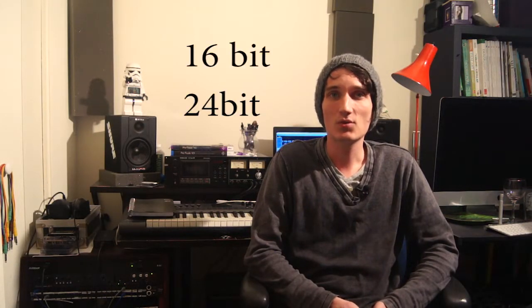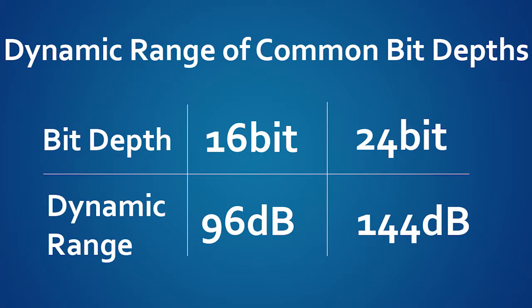Now let's move on to bit depth. The useful dynamic range of speech and music is from about 40 decibels to 105 decibels, so an analog to digital converter must be able to accurately represent differences in amplitude of at least 65 dB. Through a process known as quantization, each sample is assigned to the closest available amplitude value. Binary digits called bits are used to quantify each sample. The common bit depths are 16 and 24 bits — a 16-bit digital word accommodates a dynamic range of 96 dB, while a 24-bit digital word has a dynamic range of 144 dB. Once again, the trade-off is file size: a bigger bit depth means a bigger file.